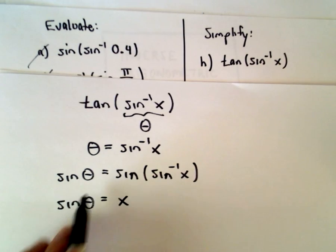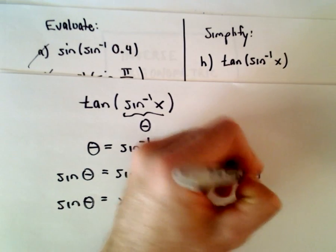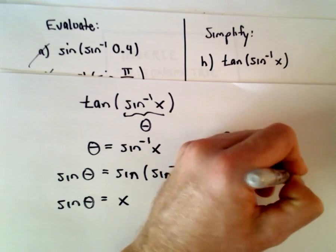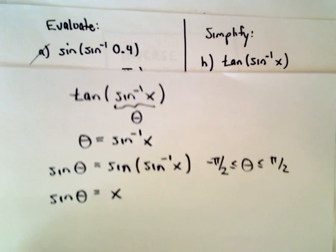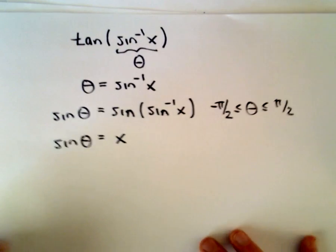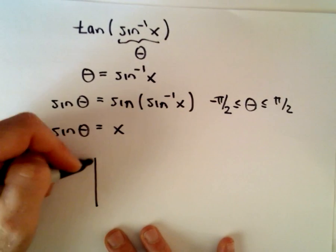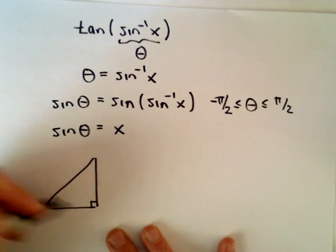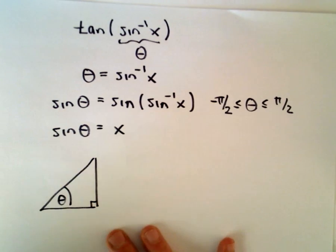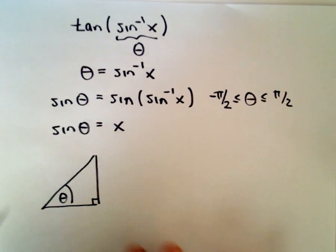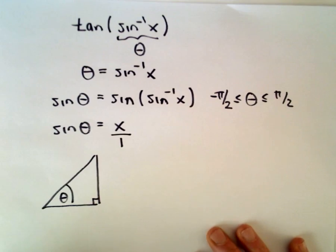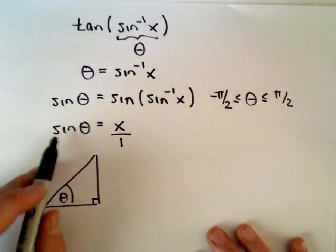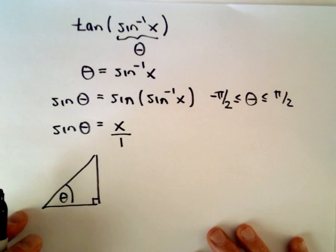And again, our angle theta in this case is going to have to be between π/2 and -π/2, just to keep emphasizing that. So now we're going to do the same thing as before. We're going to make our right triangle. Here's our angle theta. And again, when you see just a variable, if you don't have a fraction, make it into a fraction by putting it over 1. So sine of theta is going to equal x over 1.